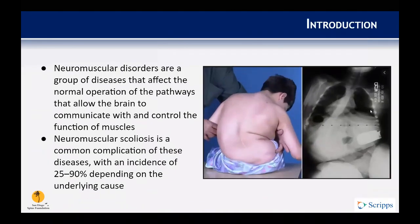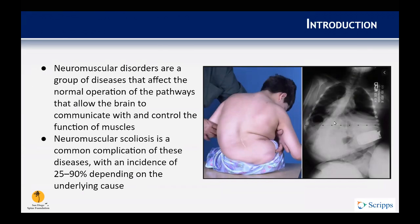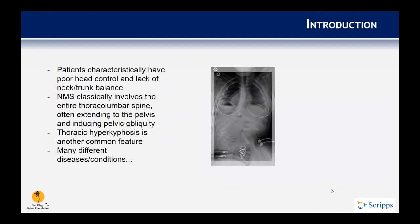Neuromuscular disorders are a group of diseases that affect the normal operation of the pathways that allow the brain to communicate the function of the muscles. Neuromuscular scoliosis is pretty common amongst patients with these disorders and can be between 25% and 90%, depending on the underlying cause.